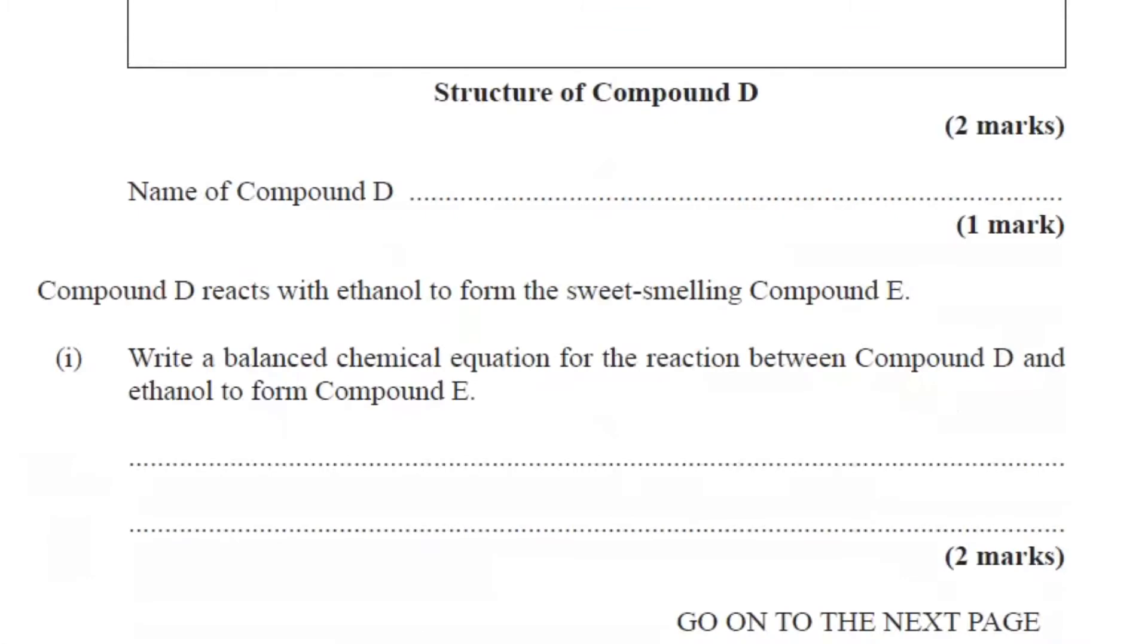Part B. Compound D reacts with ethanol to form the sweet-smelling compound E. Write a balanced chemical equation for the reaction between compound D and ethanol to form compound E. All right. So we're just going to use the condensed formula just to make things fit. So we'll start out with compound D, CH3CH2CH2COOH, and ethanol to give...